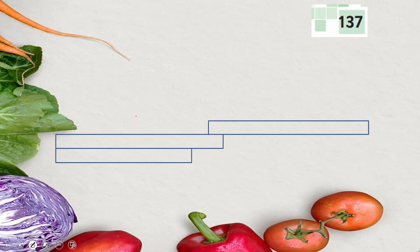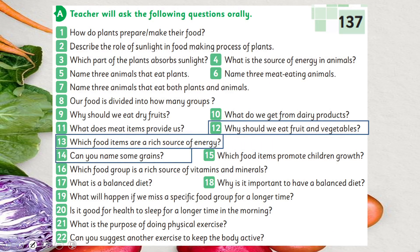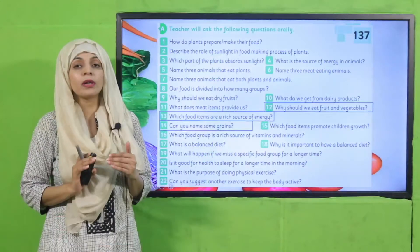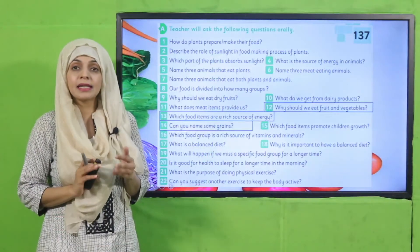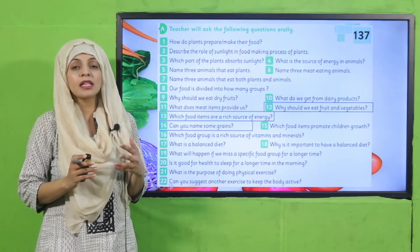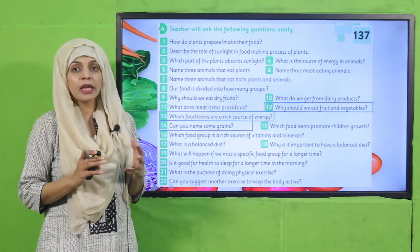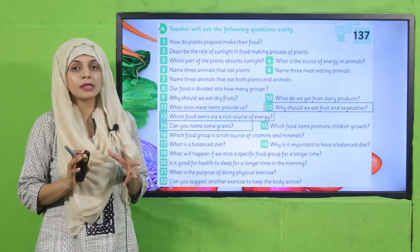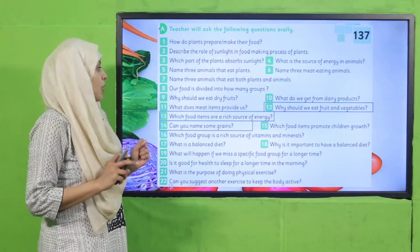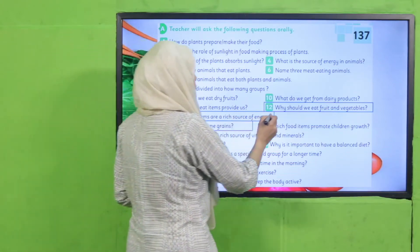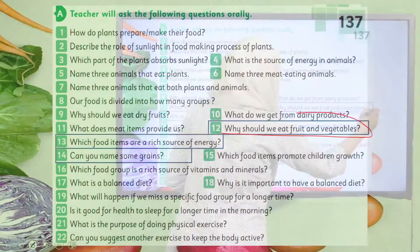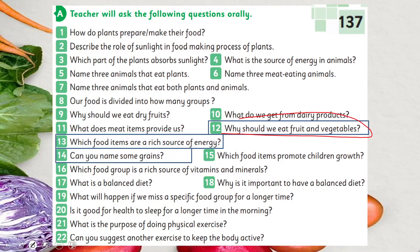Now it is time for evaluation. We will move to page number 137. I will ask these questions orally and you will answer orally. Question number 12: why should we eat fruits and vegetables? Because they are a great source of vitamins and minerals.